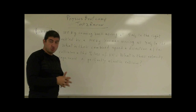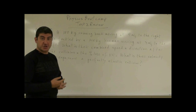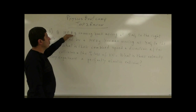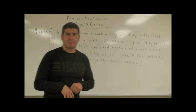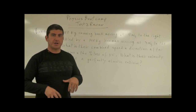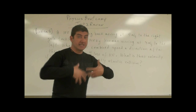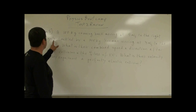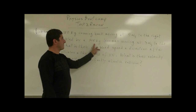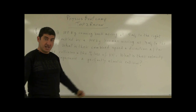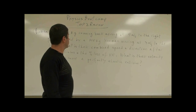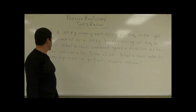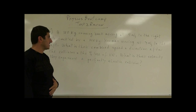Problem number five for the test review. We have a 100-kilogram running back moving at five meters per second to the right. The running back is a position in American football — they have the football and are running. They get tackled by a 140-kilogram lineman moving at three meters per second to the left. What is their combined speed and direction after the collision, and the percent loss of kinetic energy?